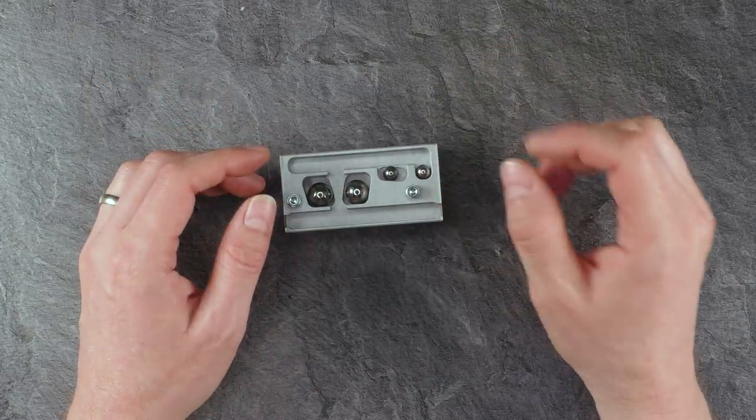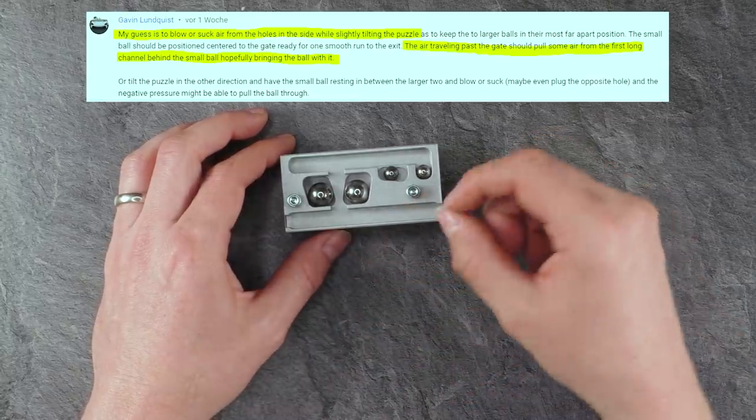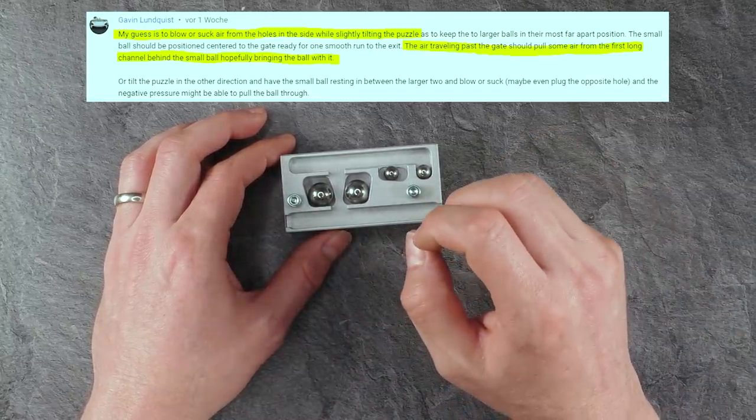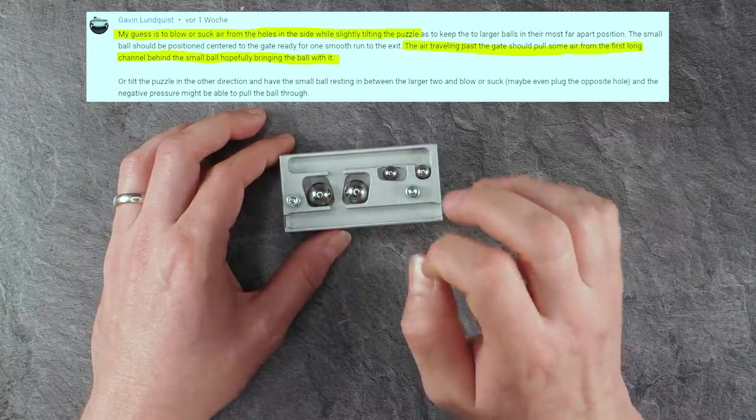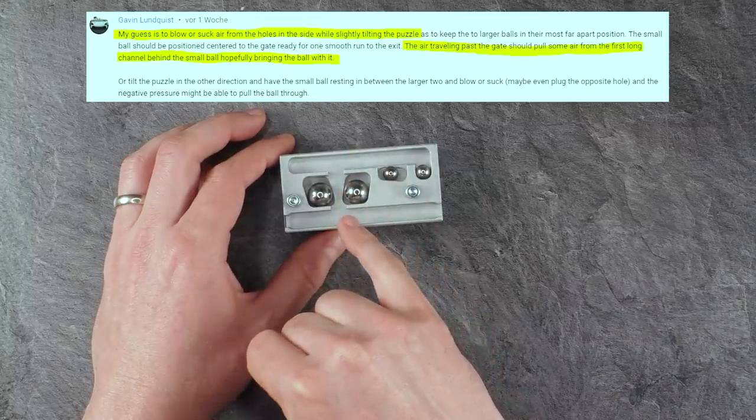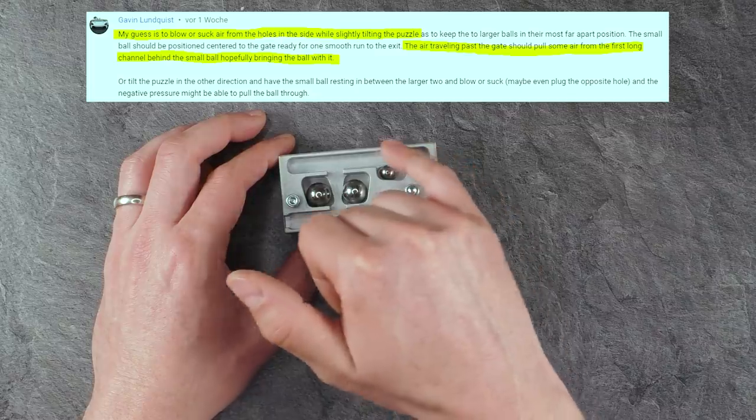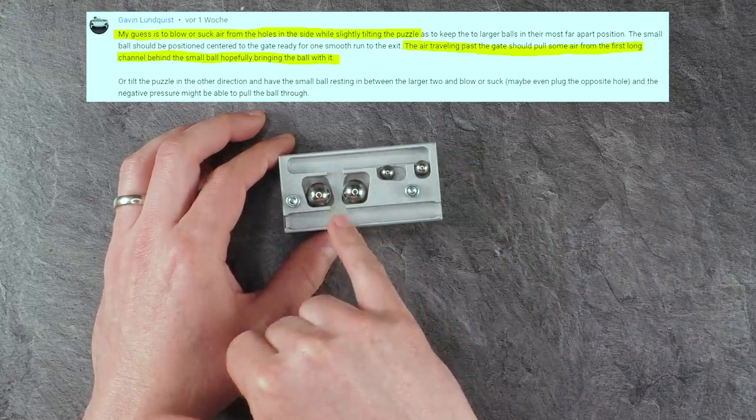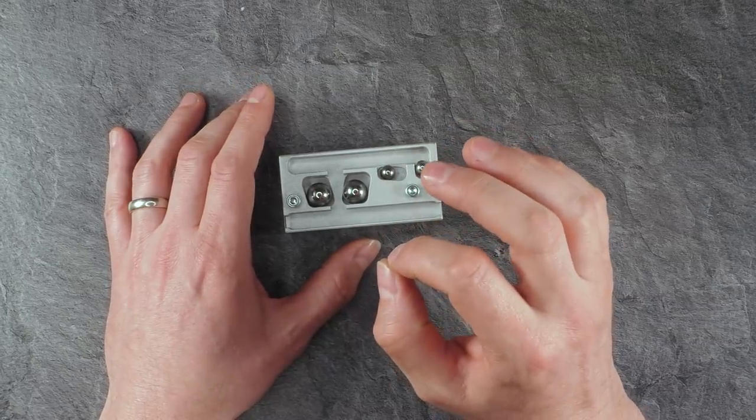There was one comment which was very interesting, and this comment was from Gavin Lundquist, and he recognized something I didn't recognize and most of us didn't recognize. He said, my guess is to blow or suck air from the holes in the sides while slightly tilting the puzzle. The air traveling past the gate should pull some air from the first long channel behind the small ball, hopefully bringing the ball with it. I'll demonstrate you now how to solve it, and then you will get perfectly the idea behind this comment, because it was 100% correct.